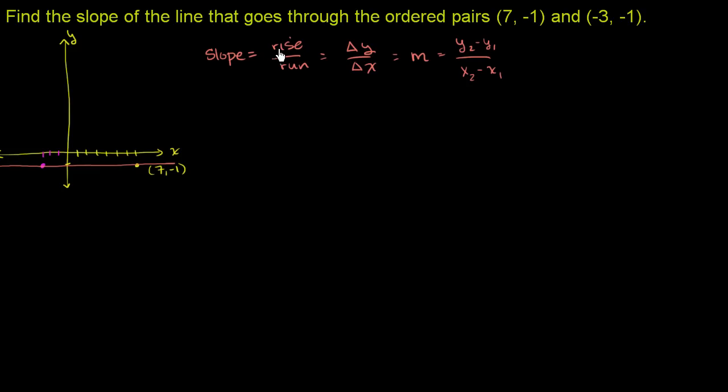But hopefully you appreciate that these are measuring inclination. If I rise a ton when I run a little bit, if I move a little bit in the x direction and I rise a bunch, then I have a very steep line. I have a very steep upward sloping line. If I don't change at all when I run a bit, then I have a very low slope. And that's actually what's happening here.